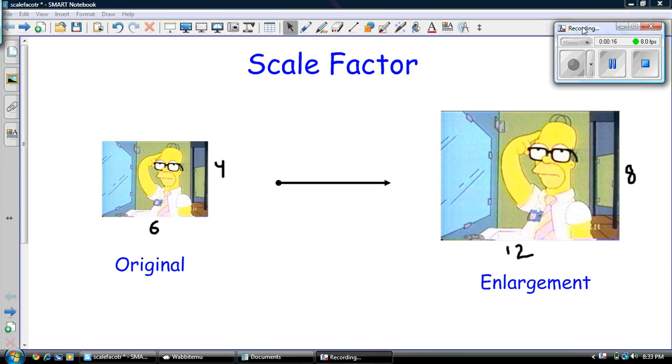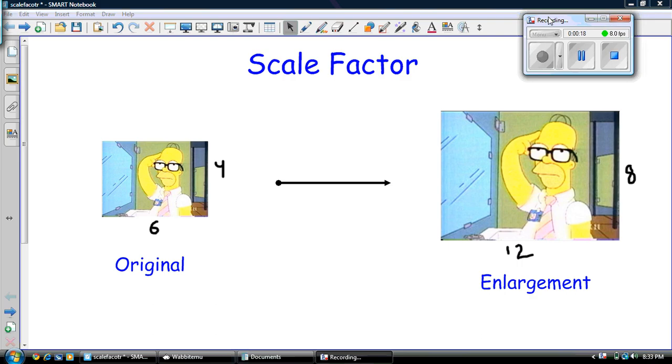So here's a simple little example I got here to illustrate the idea. You have a six by four picture of Mr. Simpson here and you want to get that enlarged to 12 by 8. So you need to find the scale factor in order to do that. What do we have to multiply this picture by in order to get this enlargement?